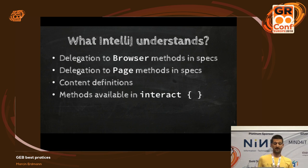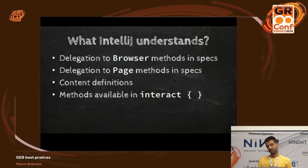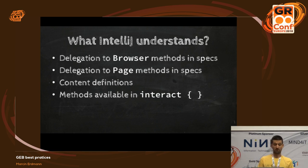IntelliJ also understands content definitions, so it knows that parameter-less content definitions that you define in your pages and modules become properties of your pages and modules. I've actually recently improved the support for JEP in IntelliJ, and in the 2018.2 version of IntelliJ it will also understand that when you have content definitions that take parameters, they become methods on your pages and modules. In the next version of JEP, it will also understand what methods you can call within the interact blocks, which are used for drag and drop and mouse movements.